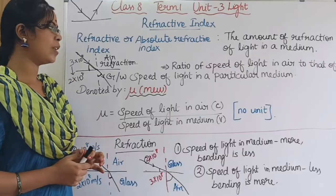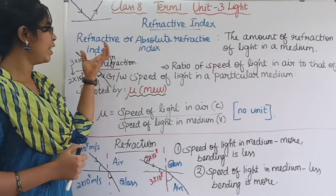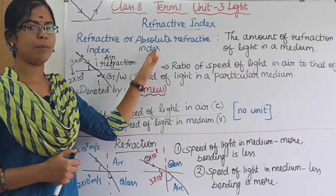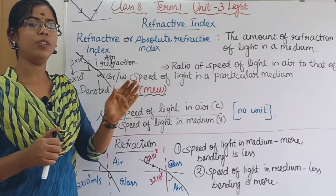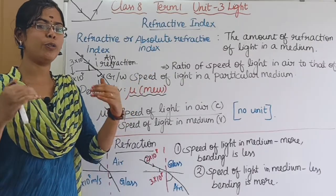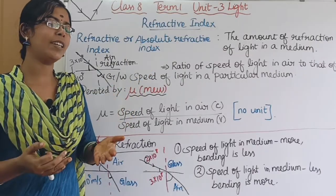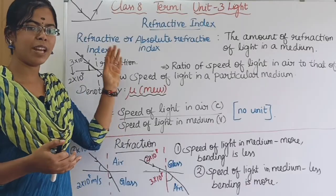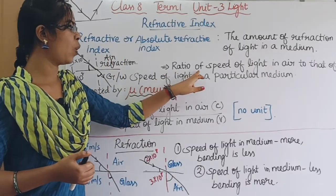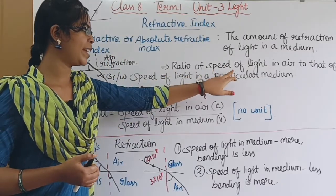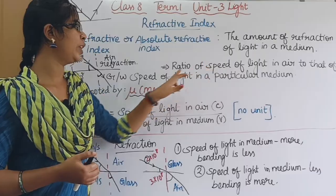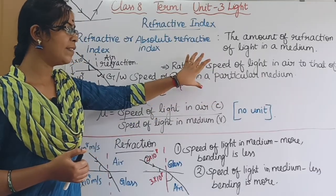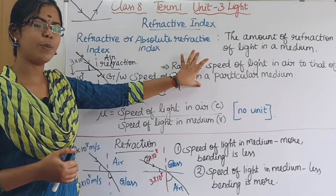Now I will tell you the refractive index — specifically the absolute refractive index. That means it measures the amount of light refracted. The refractive index is the ratio of speed of light in air to the speed of light in a particular medium. This is the formula we will use.